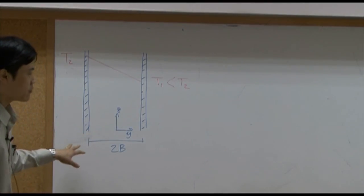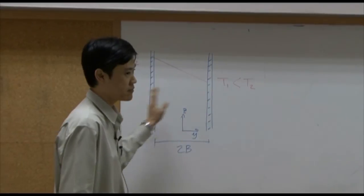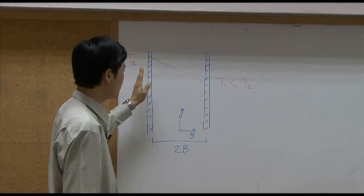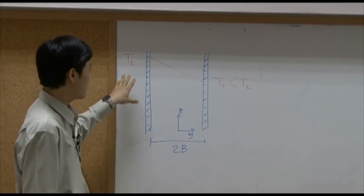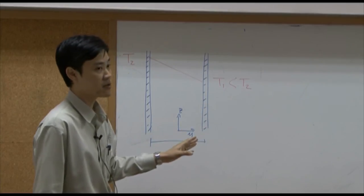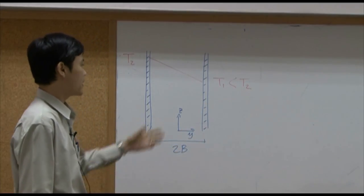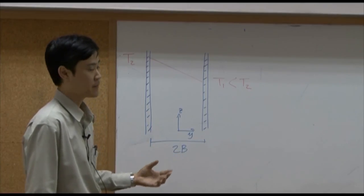In this example, you have slits, two walls. You may say that this is wall. This wall on the left has temperature T2. The wall on the right has lower temperature T1. In between the wall, you have fluid.